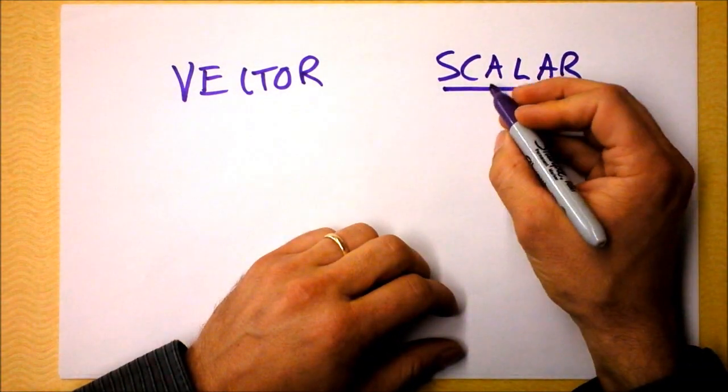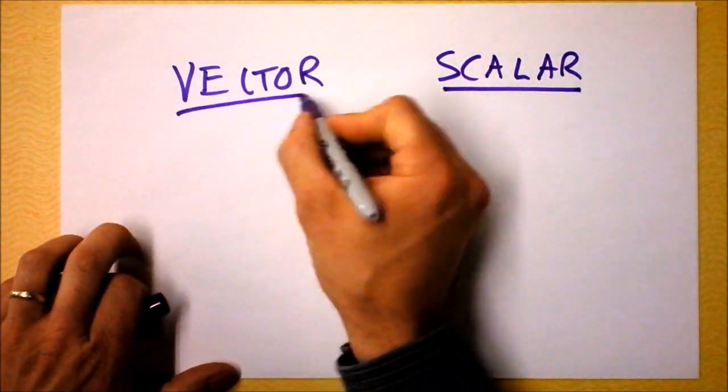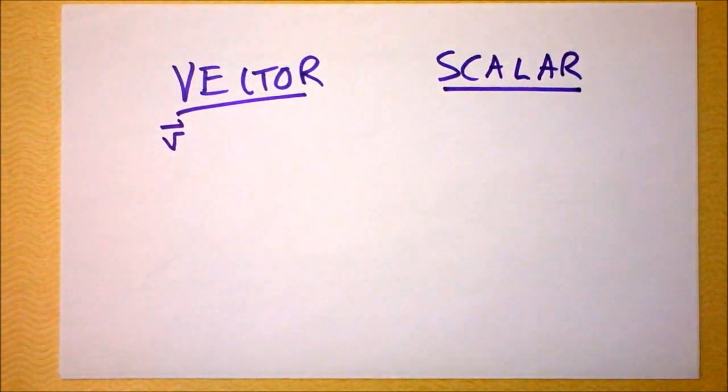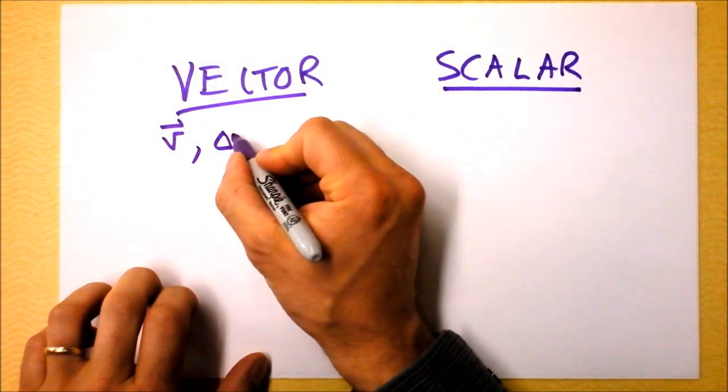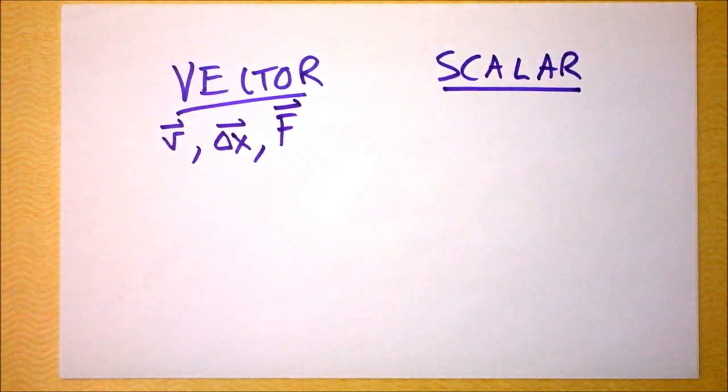Like, for instance, how many jelly beans are in a jar or what time is it. But a vector could represent something like velocity, as we saw with that ram truck going through. Or a vector could be just a displacement, just a delta x kind of thing. And vectors can also be forces. So there's a lot of physics that's represented with vectors.